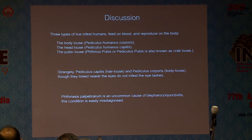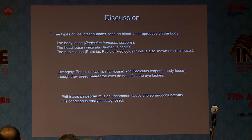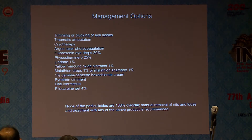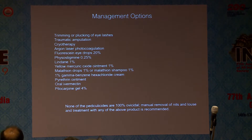There are three types of lice in the body: body louse, head louse, and pubic louse. Strangely, the lice closer to the eye do not infect the lashes — it is the pubic louse that commonly infects the lashes. Phthiriasis palpebrarum blepharoconjunctivitis is an uncommon and easily misdiagnosed cause of blepharoconjunctivitis. Various management options are available; none are 100% ovicidal, so manual removal of nits and lice along with an ovicidal agent is recommended.